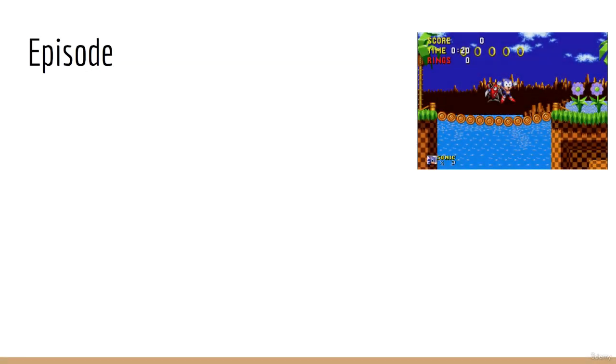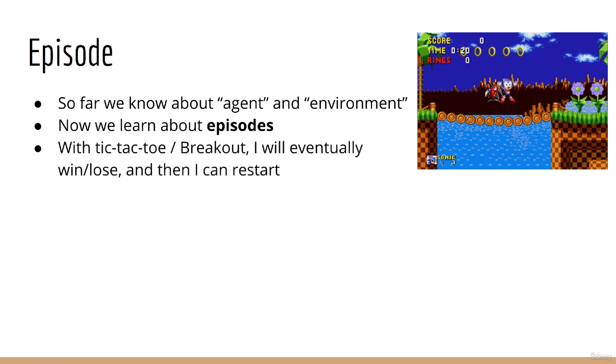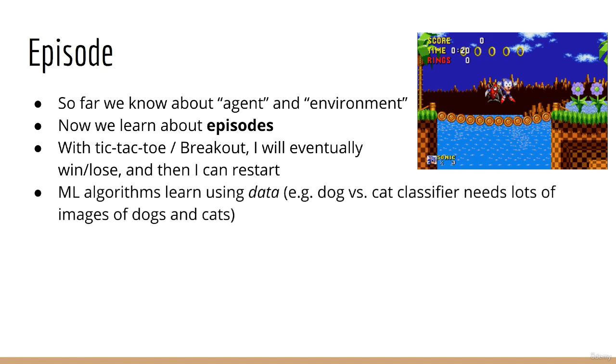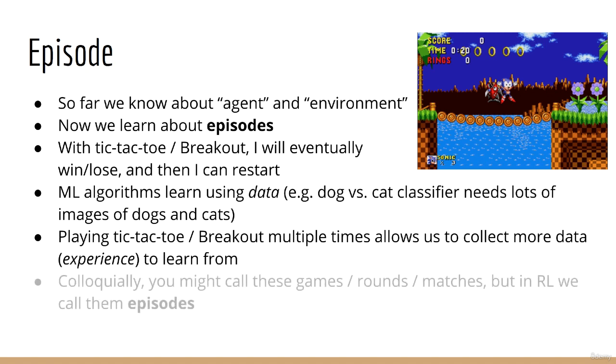Next, let's continue defining more terms. So far, you know about the agent and the environment. The next term I want to define is episode. What happens when I play a game of tic-tac-toe or breakout? Well, some sequence of events will occur, and then at the end, I will win or lose. With my math exam example, you will take your math exam, and then you'll get your grade. Now we know that with learning algorithms, the way that they learn is with data. So if you're training a dog versus cat classifier, you'll need lots of labeled images of dogs and cats. Similarly, with tic-tac-toe or breakout, once the game is over, I can opt to play again. This is the method through which I will gain experience, or to be more technical, data. You might call these games or rounds or matches, but in reinforcement learning, the official term is episode.